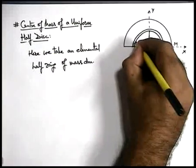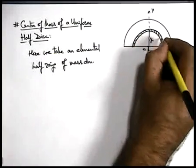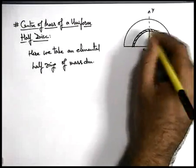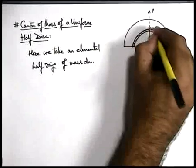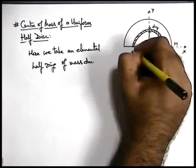As I think all of you know very well that in case of a disc, always we consider a ring element. So if it is a half disc, we consider a half ring element which is of width dy and radius y.